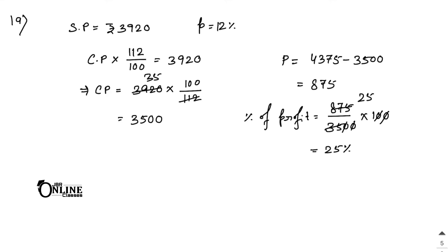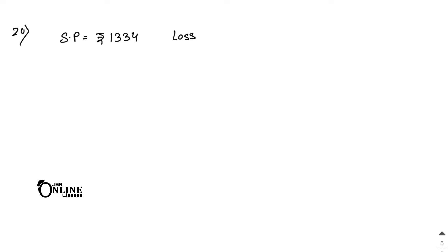Sum number 20: By selling a bicycle at rupees 1,334 a shopkeeper suffers a loss of 8%. So CP into 92 by 100 equals 1,334.